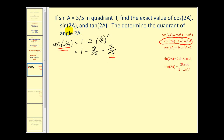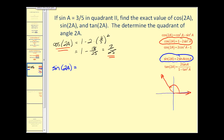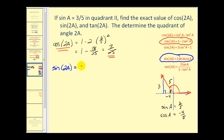Next, let's find sine of two A. There is only one identity for sine two A, and we can see we'll need cosine of angle A. Since sine A equals three-fifths in the second quadrant, we draw a reference triangle. With opposite over hypotenuse equal to three-fifths, this is a three-four-five right triangle. Since we're in the second quadrant, the adjacent side is labeled negative four, so cosine A equals negative four-fifths.